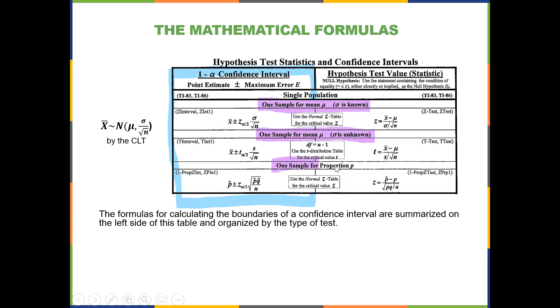Finally, we have estimates for a population proportion with a single sample. And p-hat is the sample proportion.